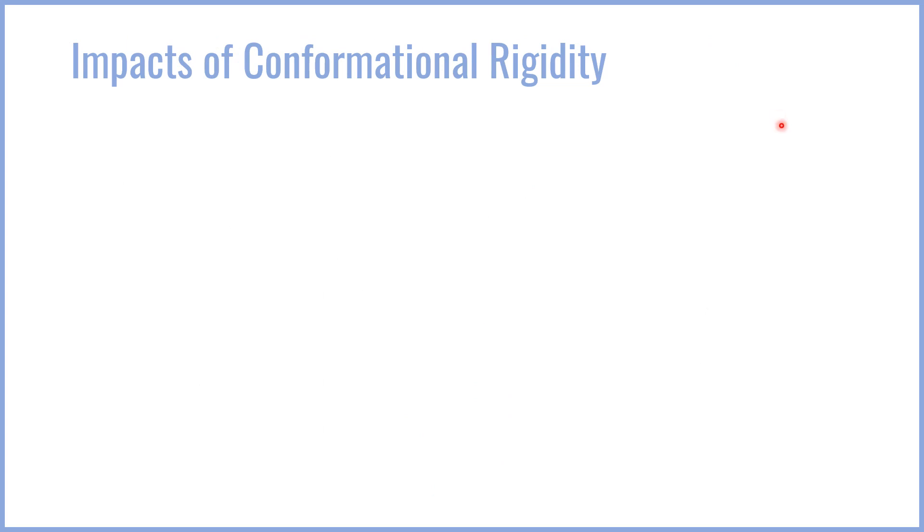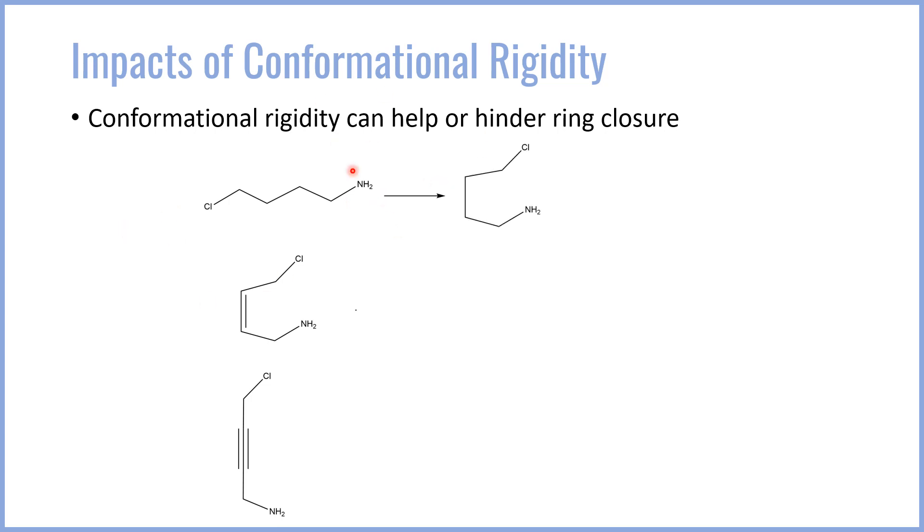Another issue that we might consider in terms of SN2 restrictions or even SN1 restrictions has to do with conformational rigidity associated with multiple bonds or pi bonds. Conformational rigidity can help or actually hinder ring closure. Consider the following three species. They all have the same number of carbons between the nucleophile and the leaving group. However, their outcomes are very different. In order for the ring to close for this first species, this straight single bonded chain, the single bonds need to rotate such that the amine is in a position to attack this leaving group from behind. In the case of the double bond though, this position is already achieved. This amine is already pre-positioned to attack the chlorine from behind.